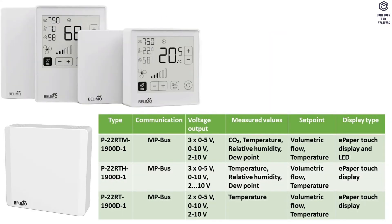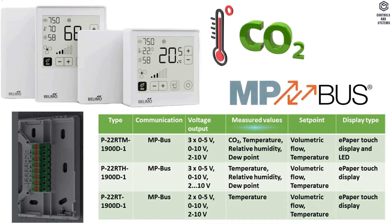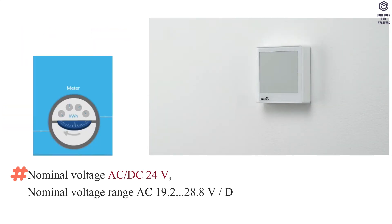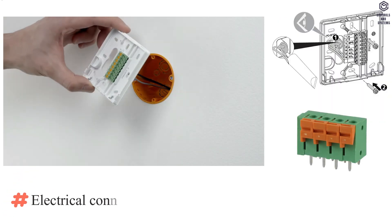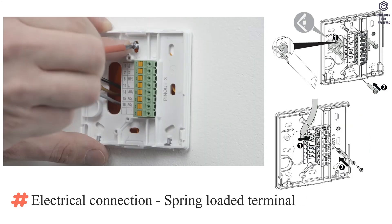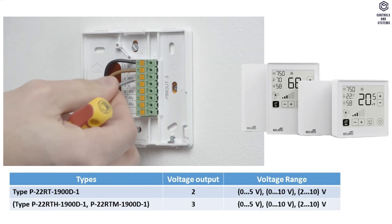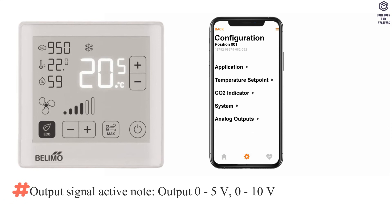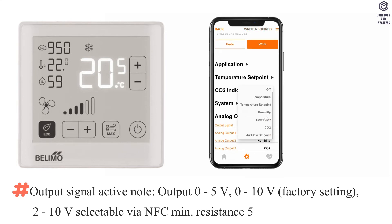Types overview: this table indicates the different types of models on communication, voltage output, measured values, set point, and display type. Electrical data: nominal voltage is AC or DC 24 V. Power consumption in AC is 1 VA; DC is 0.5 W. Electrical connection is spring-loaded terminal 0.25 to 1.5 mm². Output signal active: output 0 to 5 V, 0 to 10 V (factory setting), and 2 to 10 V — selectable via NFC; minimum resistance 5 kΩ.